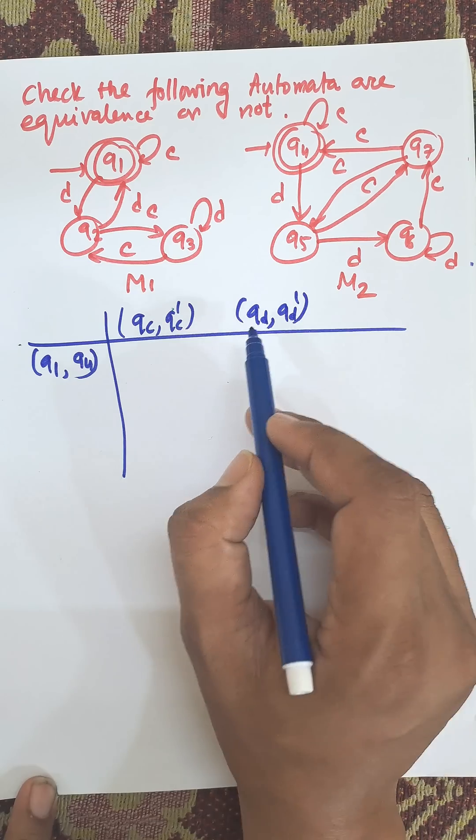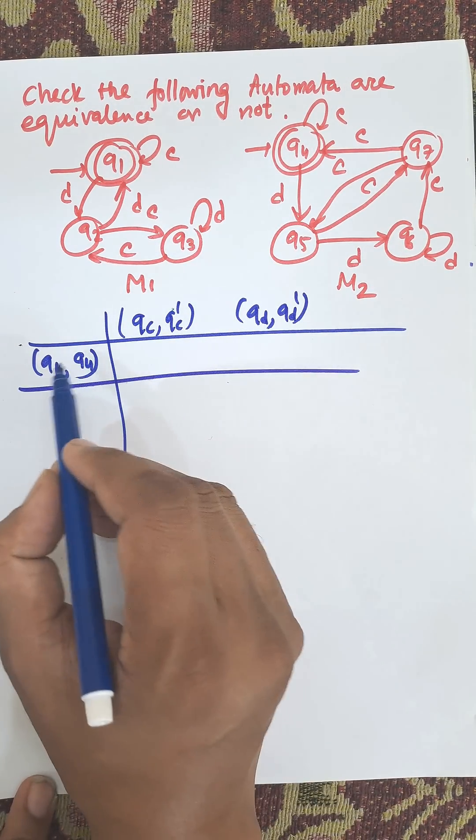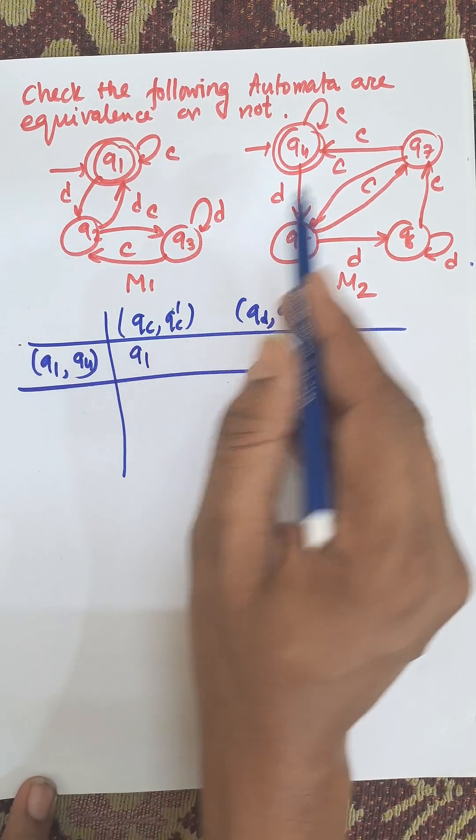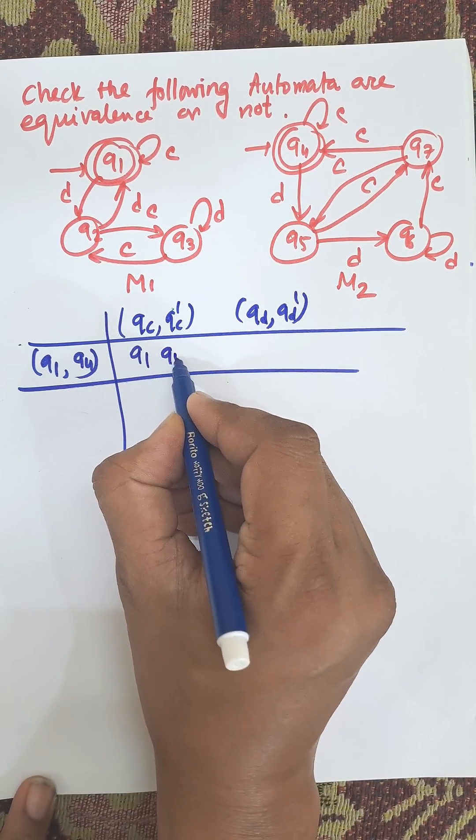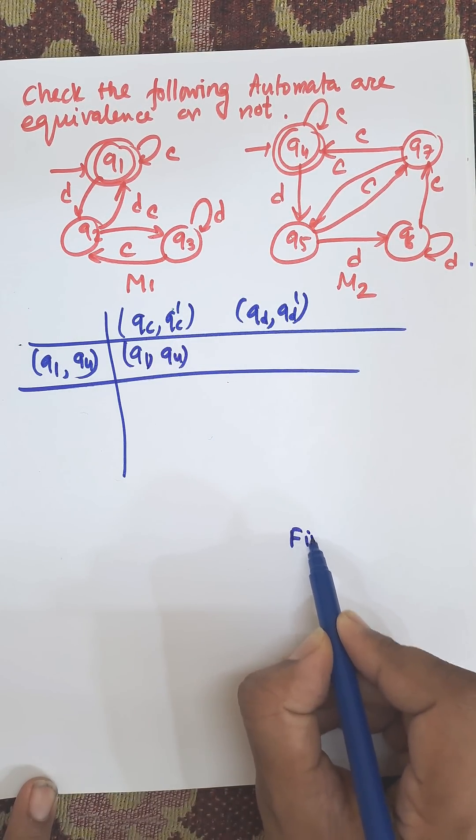Now this is the initial table structure. Now we need to calculate from Q1 to C. Q1 to C there is Q1. Q4 to C this is Q4.